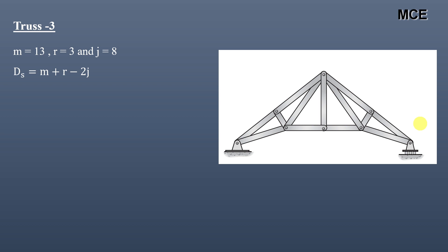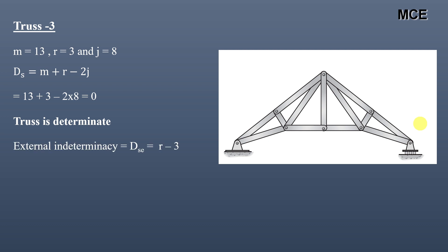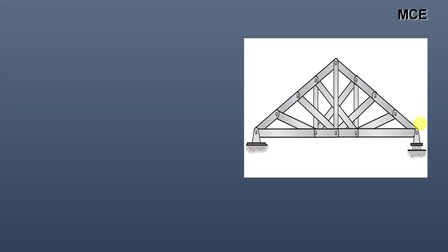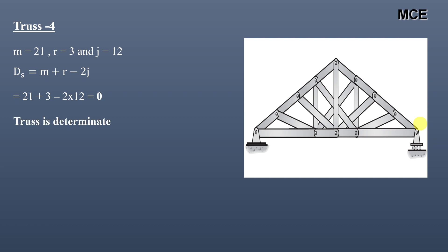For truss three, ds = 0, meaning the truss is determinate. External indeterminacy equals number of reactions minus 3, which is 0, and internal indeterminacy is also 0. For truss four, this truss has 21 members, 3 reactions, and 12 joints.